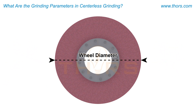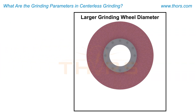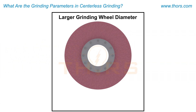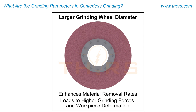The grinding wheel diameter, or DS, is selected based on the specifications of the grinding machine design. A larger grinding wheel diameter enhances material removal rates but may lead to higher grinding forces and workpiece deformation.